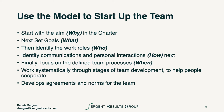We use the model especially at the start of the team. We start by discussing the aim in the charter, we set up the goals, we then try to identify the various work roles, and identify the communications and personal interactions necessary to help the team move and make progress towards the aim. Finally, we focus on the defined team processes, however the team defines them, and then we work systematically through the stages of team development to help people cooperate using the Get-A-Grip model. It helps us develop agreements and norms for the team as they move from forming, storming, into the norming stages, and ultimately into the performing stage of team development.